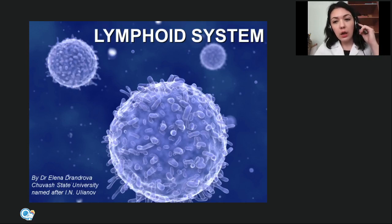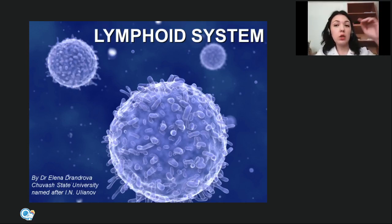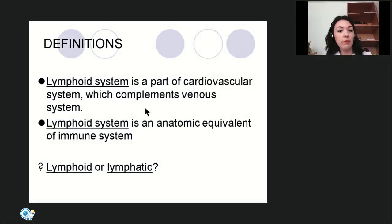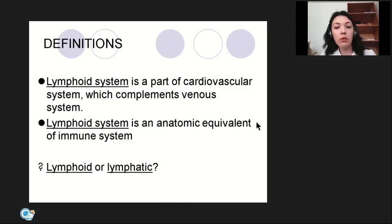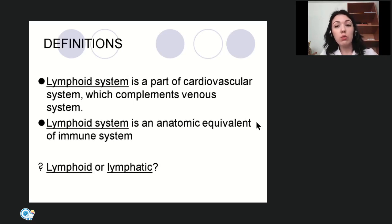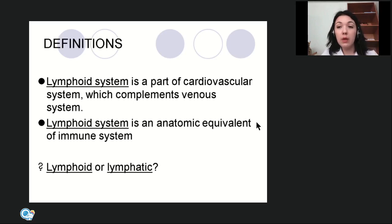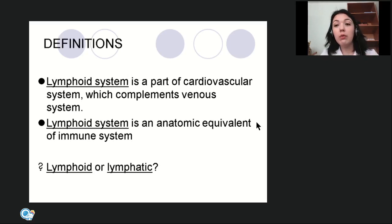Today is our last lecture this semester, dedicated to the lymphoid system. The lymphoid system is part of the cardiovascular system and complements the venous system. Blood flows from the heart through arteries and returns through veins, but not all blood that left the heart through arteries can return through veins — the capacity of veins is less than arteries — so we have the lymphoid system as an additional complementary part.